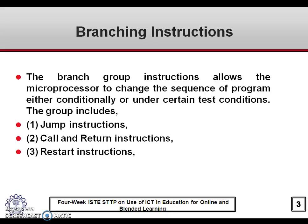The branching instruction allows the microprocessor to change the sequence of a program either conditionally or under certain test conditions. These conditions involve checking the carry flag, zero flag, parity flag, sign flag, etc. Accordingly, the group includes jump instructions, call and return instructions, and restart instructions.